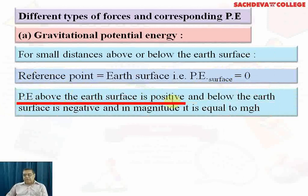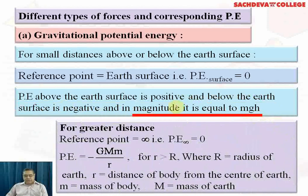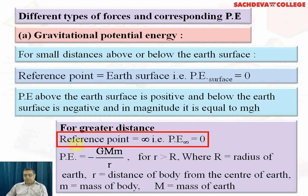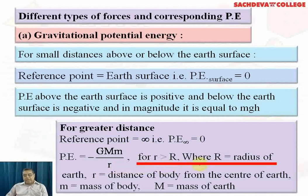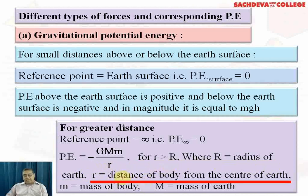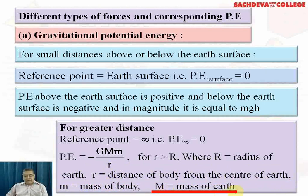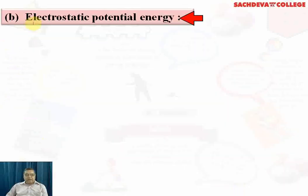Potential energy above the Earth's surface is positive and below is negative, with magnitude mgh. For very large distances (in the universe), the reference point is infinity and potential energy at infinity is zero, giving PE = −GMm/r for r greater than R (radius of Earth), where small r is the distance from the center of Earth. This can also be applied to the Sun-Earth system, where small m becomes Earth's mass and capital M becomes the Sun's mass.